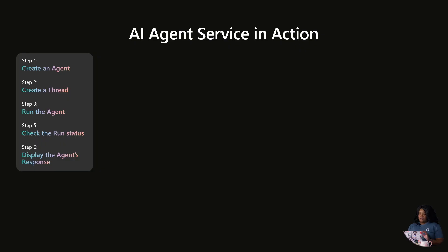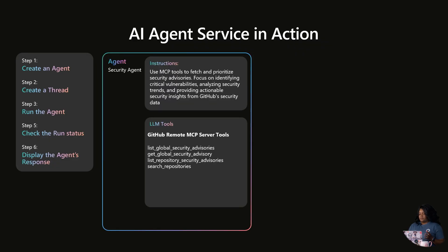I'll first start by showing the agent and how it's built in AI Foundry and the components before we jump in. There are six steps to create this agent within the AI Foundry service. First, we're going to focus on creating a security agent. We're going to use a custom instruction, using MCP tools to fetch a security advisory from GitHub Advanced Security and focus on vulnerabilities so customers can get insights directly from their GAS service.